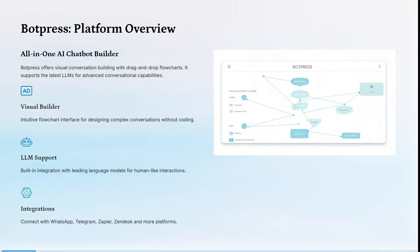Let's have a look at Botpress. It's an all-in-one AI chatbot builder. It offers visual conversation building with a drag-and-drop flowchart. It also supports the latest LLMs for advanced conversational capabilities, with an intuitive flowchart interface for designing complex conversations without actually using code. Its built-in integrations with leading language models for human-like interactions really set it apart.